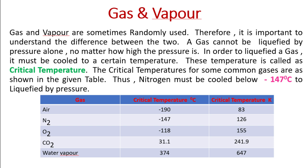Gas and vapor are sometimes used interchangeably, so it is important to understand the difference between the two. A gas cannot be liquefied by pressure alone, no matter how high the pressure is. In order to liquefy a gas, it must be cooled to a certain temperature called the critical temperature. For example, nitrogen must be cooled below minus 147 degrees centigrade to be liquefied by pressure.